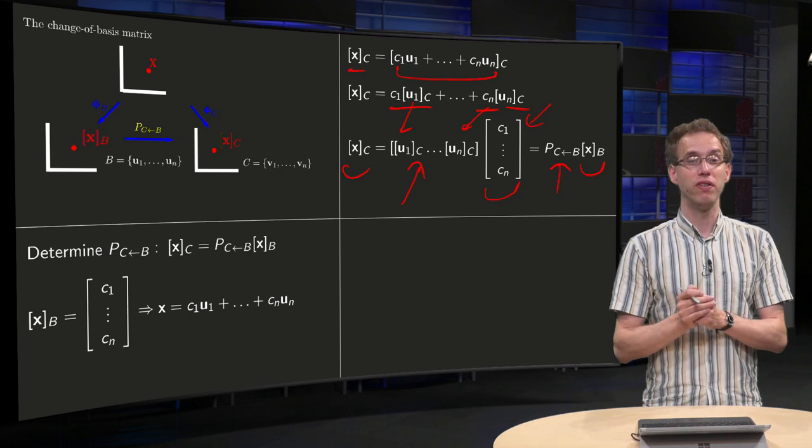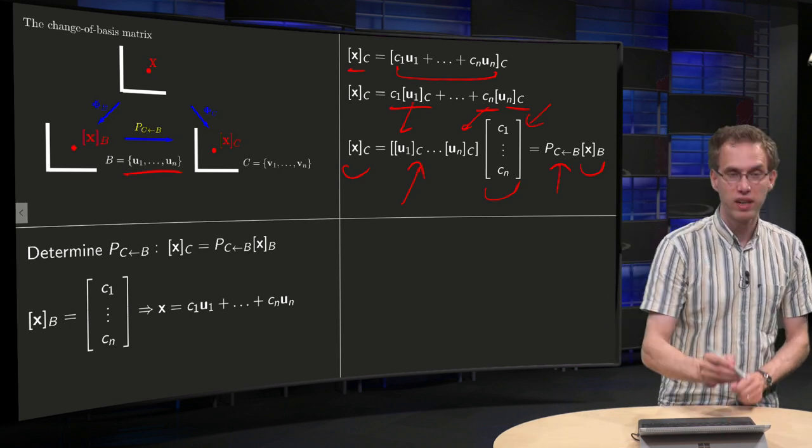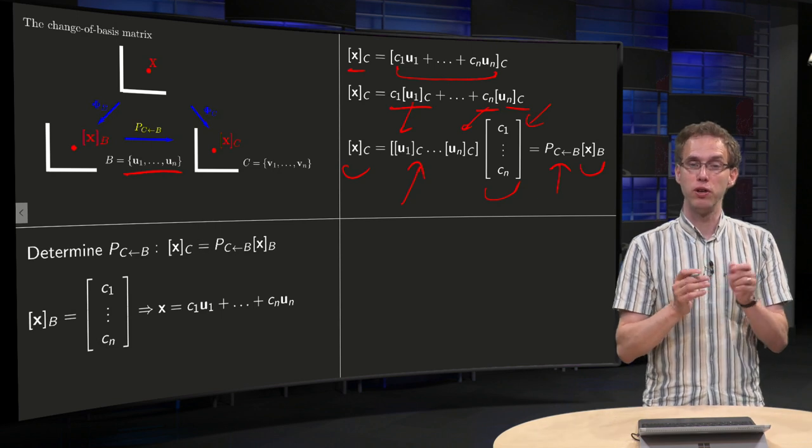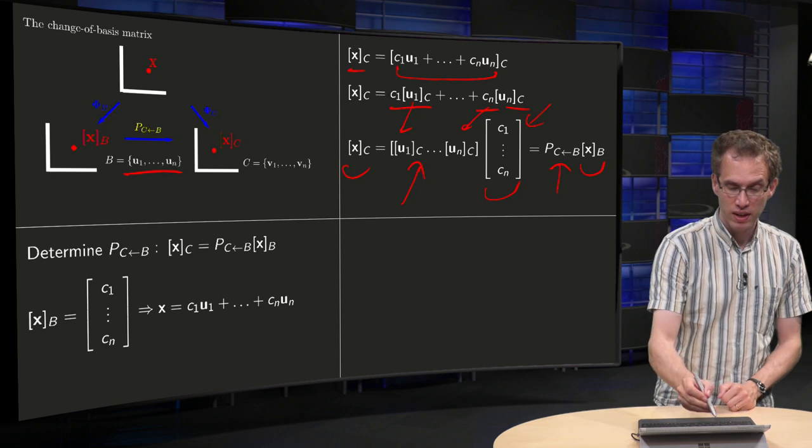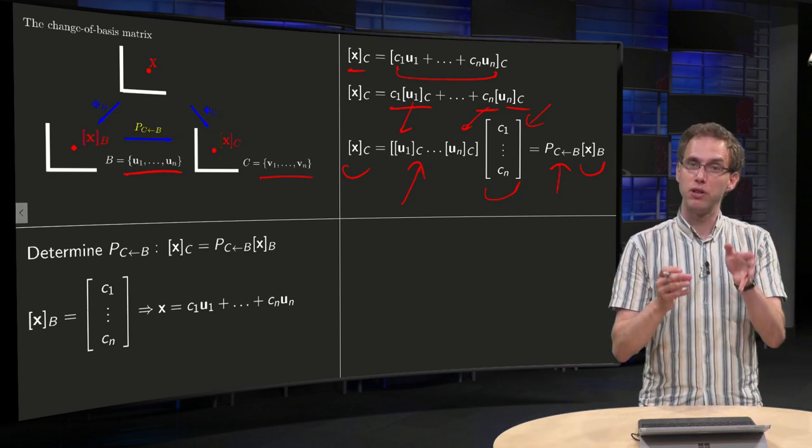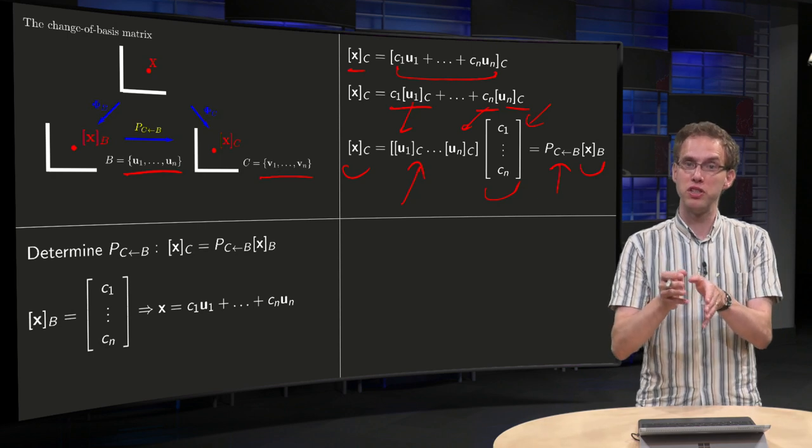So how do you find your P from B to C? You take all your vectors in your original basis B, u_1, u_2, etc., and then you compute its coordinate vector in the new basis C, and you put those in the matrix. So you have u_1 in the basis C, u_2 in the basis C, etc., up till u_n in the basis C.